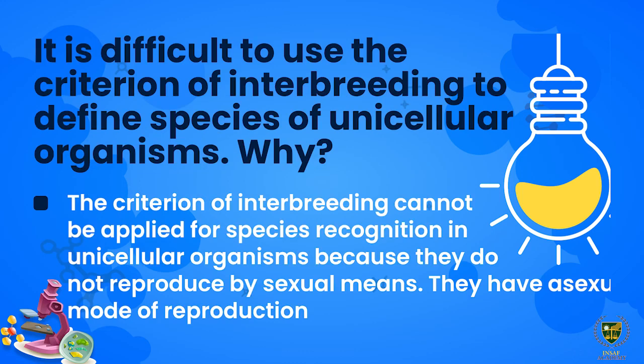Next statement: It is difficult to use the criteria for interbreeding to define species of unicellular organisms — why? The criteria of interbreeding cannot be applied for species recognition in unicellular organisms because they do not reproduce by sexual means. Unicellular organisms have an asexual mode of reproduction, not sexual reproduction.